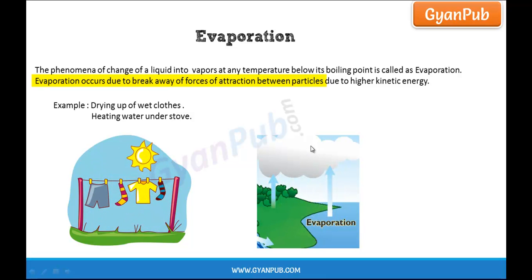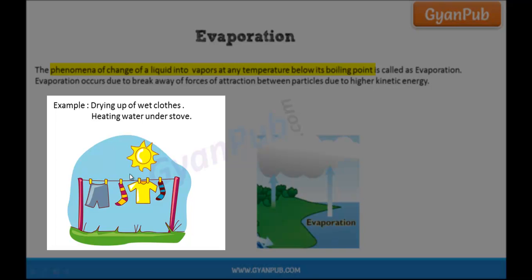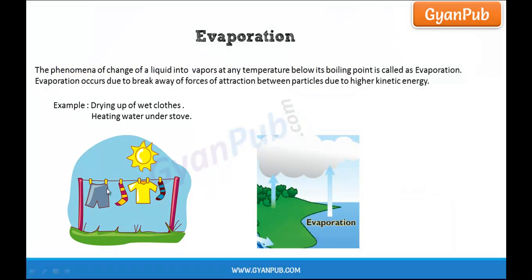We see many examples of evaporation in our day-to-day life. A main example is drying up of wet clothes. Drying up of wet clothes is the best example of evaporation. We dry the wet clothes by spreading them so that the water particles on the surface of the clothes get dried up and gradually the cloth gets dried up slowly.